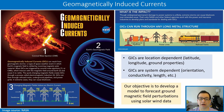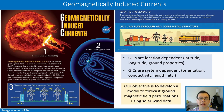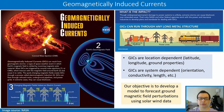GICs are a complex problem. Their occurrence depends on the solar wind strength, the magnetospheric response, the propagation of disturbances through the ionosphere and into the ground, the location — latitude and longitude — the effect of conductivity on the ground, and the particularities of each system being affected including orientation and length, among others. This talk is about one aspect of the whole GIC process.